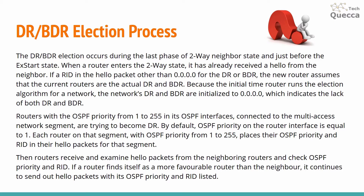The DR-BDR election process occurs during the last phase of the two-way neighbor state and just before the ExStart state. When a router enters the two-way state it has already received a hello from the neighbor. If the router ID in the hello packet is other than 0.0.0.0 for the DR or BDR, the new router assumes that the current routers are the actual DR and BDR. Because the first time a router runs the election algorithm, the network's DR and BDR are initialized to 0.0.0.0, indicating the absence of both.